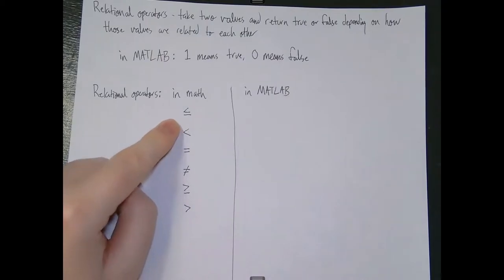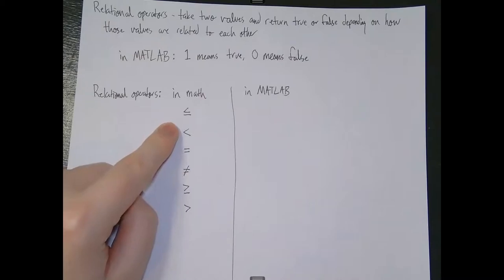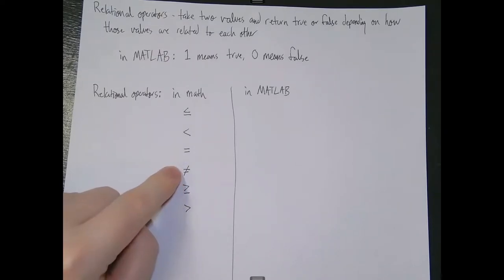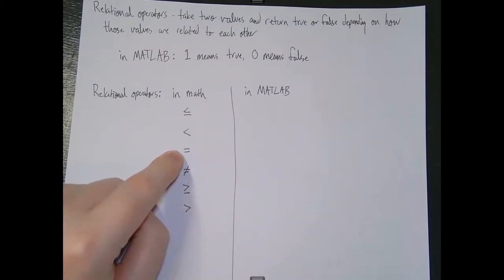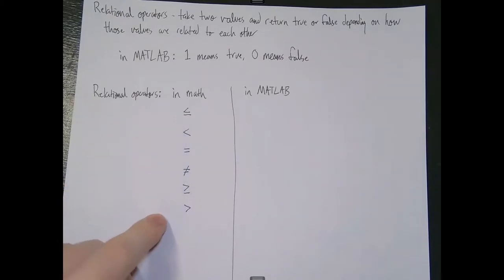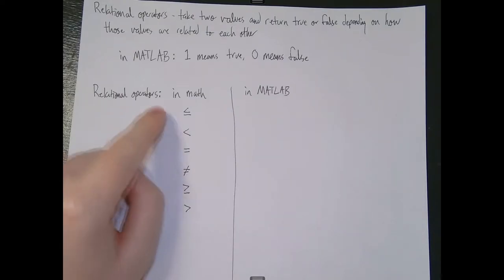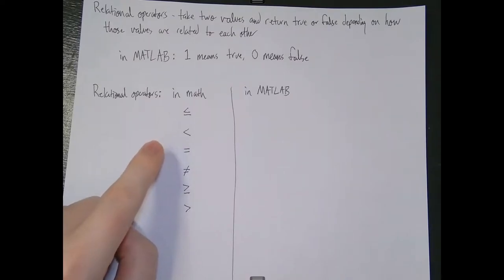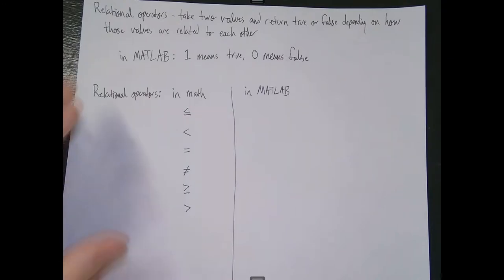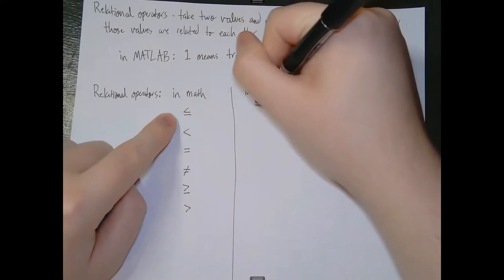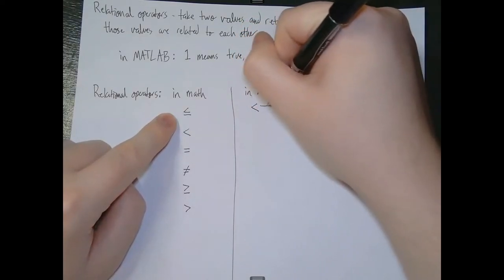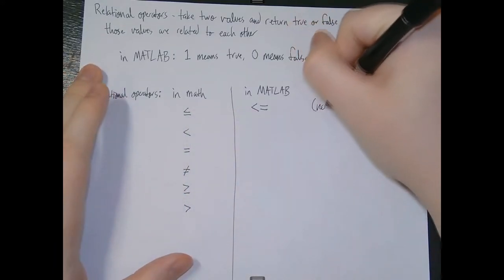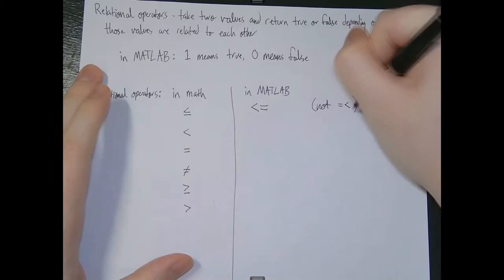In MATLAB, the relational operators don't look exactly like how you're used to seeing them in normal math or algebra. For example, you can't find a less than or equal to sign on your keyboard. We also don't have greater than or equal to or not equal to on a keyboard, and we use the equal sign for variable assignment. So people who created coding languages — dating back much earlier than MATLAB — figured out different ways to type all of these symbols.